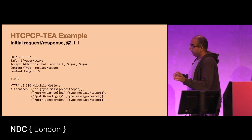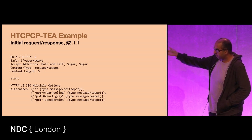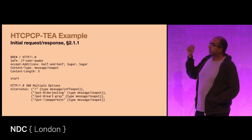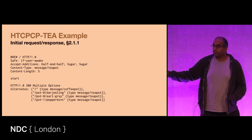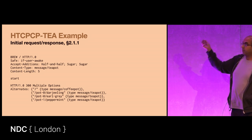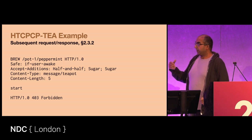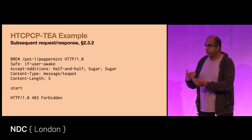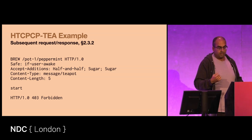You're never going to see this in production, but just in case, here are some examples of how you would write a request to a teapot that talks the teapot brewing extensions. If you ask for a brew — in this case milk and two sugars — it will not send you a 200; it will send you a 300 Multiple Options and provide you with alternatives. If you want coffee, it will tell you where to go for coffee. If you want various types of tea, it will tell you where to go. And if you'd like peppermint tea with milk and two sugars, the RFC defines whether the teapot will accept your request. In this case, peppermint tea with milk and two sugars is forbidden — so you can't have that.